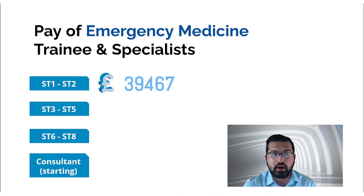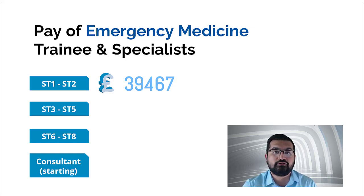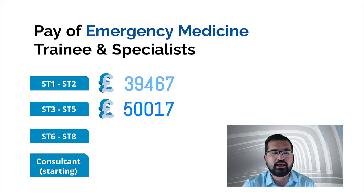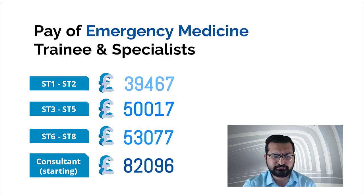From ST1, the basic yearly pay is £39,467. For emergency medicine specifically, you'll probably be earning at least 30 to 40% more on top of that because of on-calls, night shifts, and out-of-hours work. For ST3 to ST5, the basic pay per year increases to the next band, and from ST6 to ST8 it increases further. The consultant starting salary is the listed amount, though consultant pay in emergency medicine can vary significantly from hospital to hospital due to negotiation — there is no fixed salary beyond this minimum starting figure.